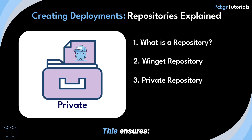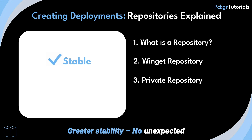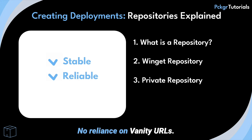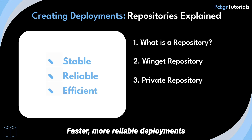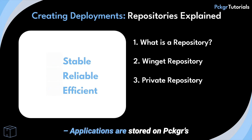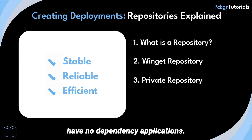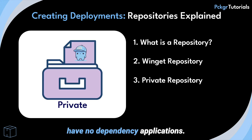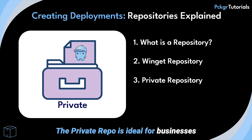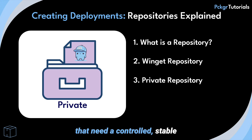This ensures greater stability, no unexpected changes from vendors, no reliance on vanity URLs, and faster, more reliable deployments. Applications are stored on Packager's secure servers with the installer files embedded within the app and have no dependency applications. The private repo is ideal for businesses that need a controlled, stable environment for software deployment.